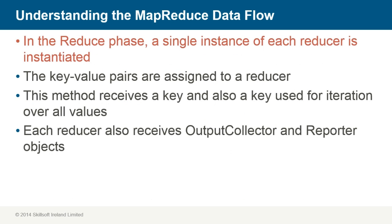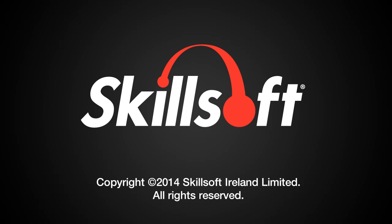In the reduce phase, a single instance of each reducer is instantiated for each reduced task. The reduce phase occurs after the map phase of the MapReduce process. The key-value pairs are assigned to a reducer. The reducer calls its reducer method, called reduce. This method receives a key and also a key for the iteration over the values that are associated with the key. These values are returned in an undefined order by the iterator. Each reducer also receives an output collector and reporter object. These objects are used in the same way as they are in the map method.